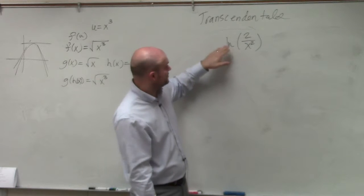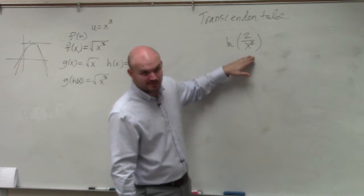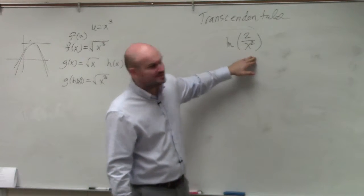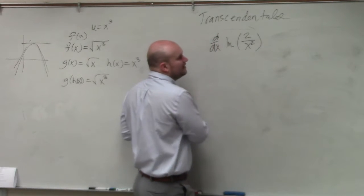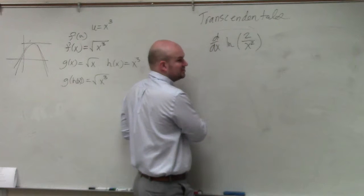Technically, you guys can look at this even as a chain rule. You have ln of 2 over x squared. But the chain rule wouldn't be the best way to simplify. Oh, I'm sorry, even got the right derivative. But the chain rule wouldn't even be the best way to do this.